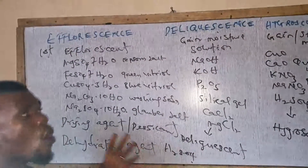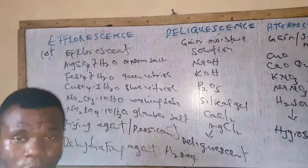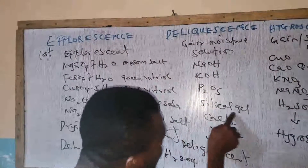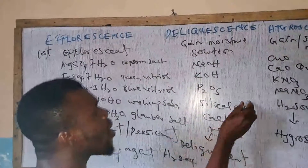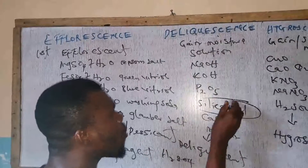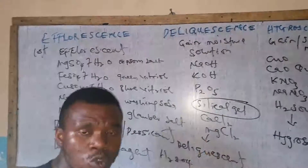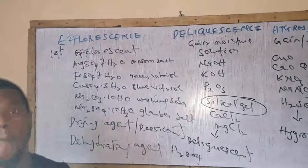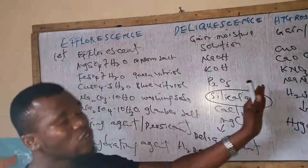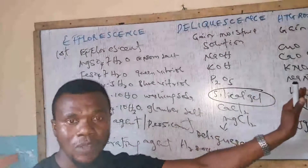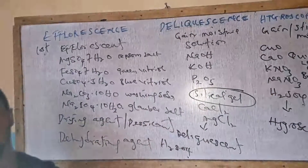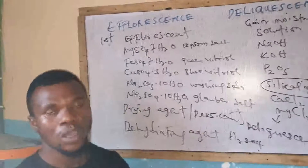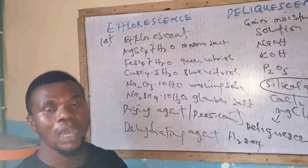A common substance that can be used to dry almost all gases and substances is silica gel, which has the general property of drying almost any substance compared to other deliquescent substances.